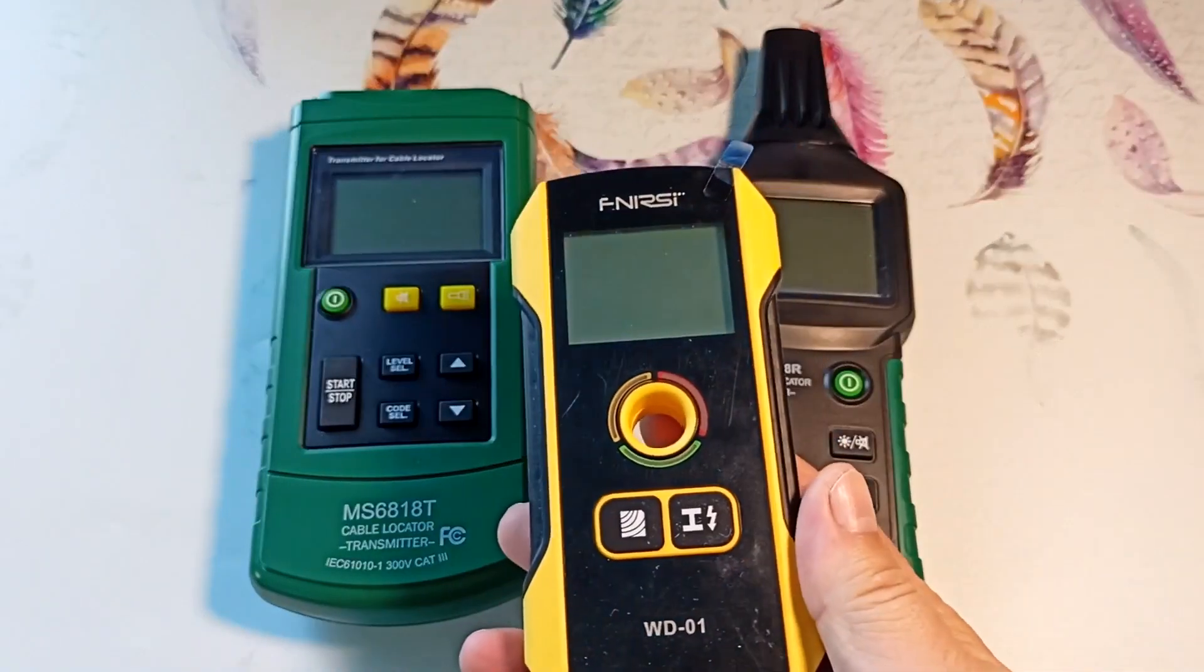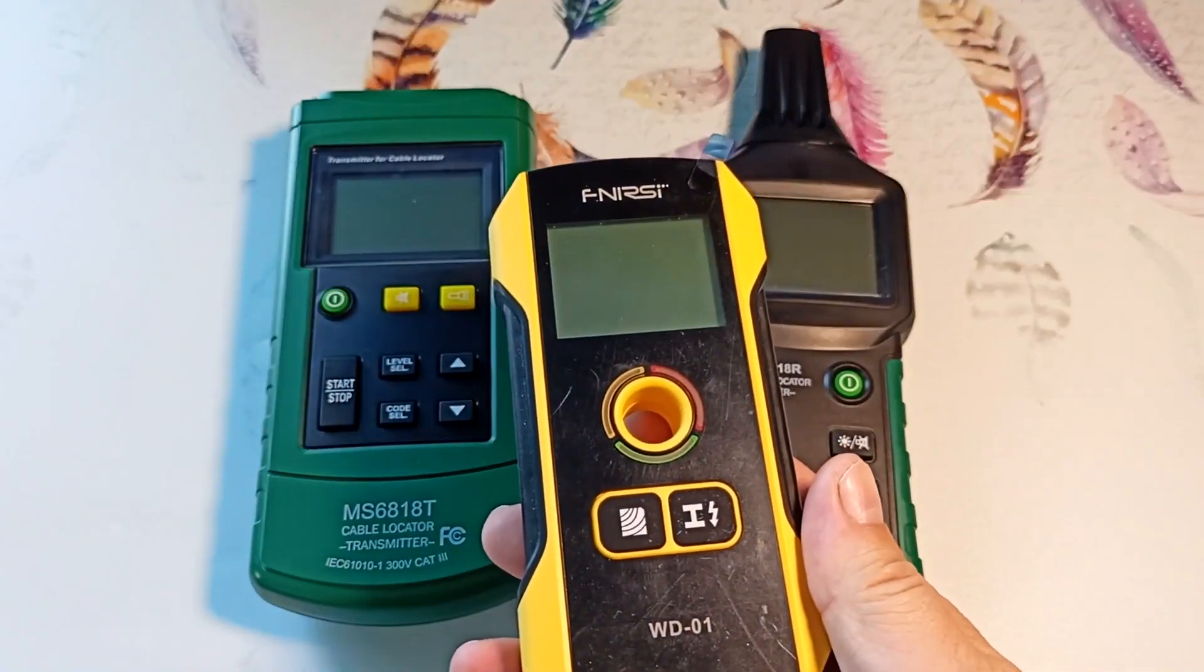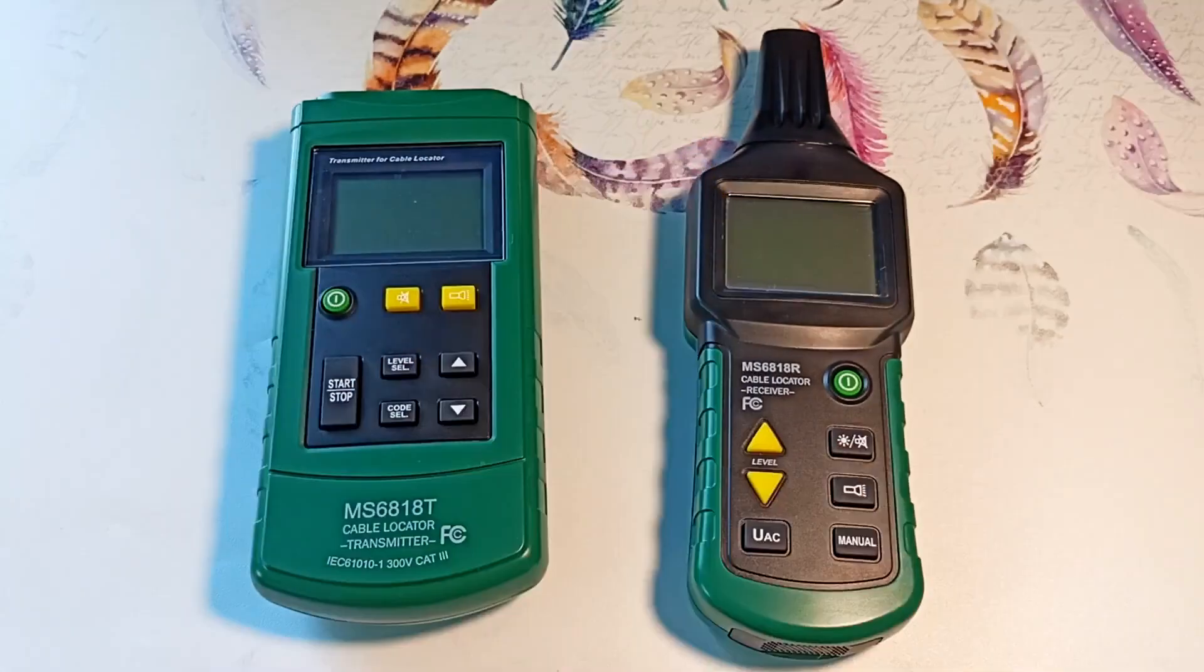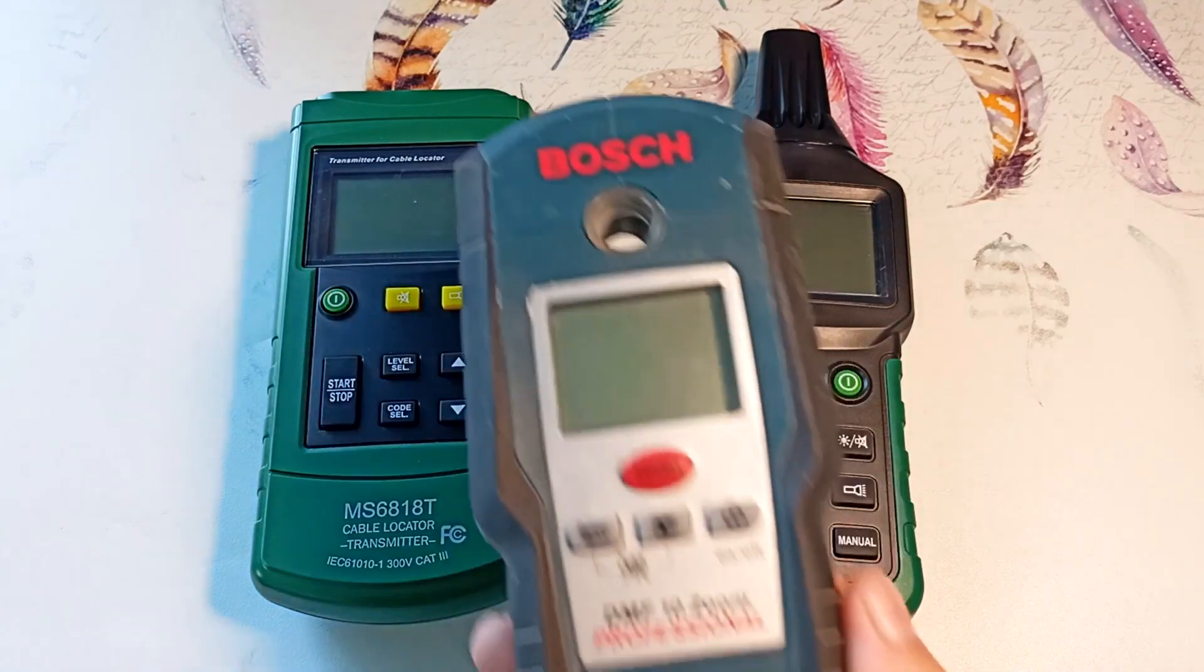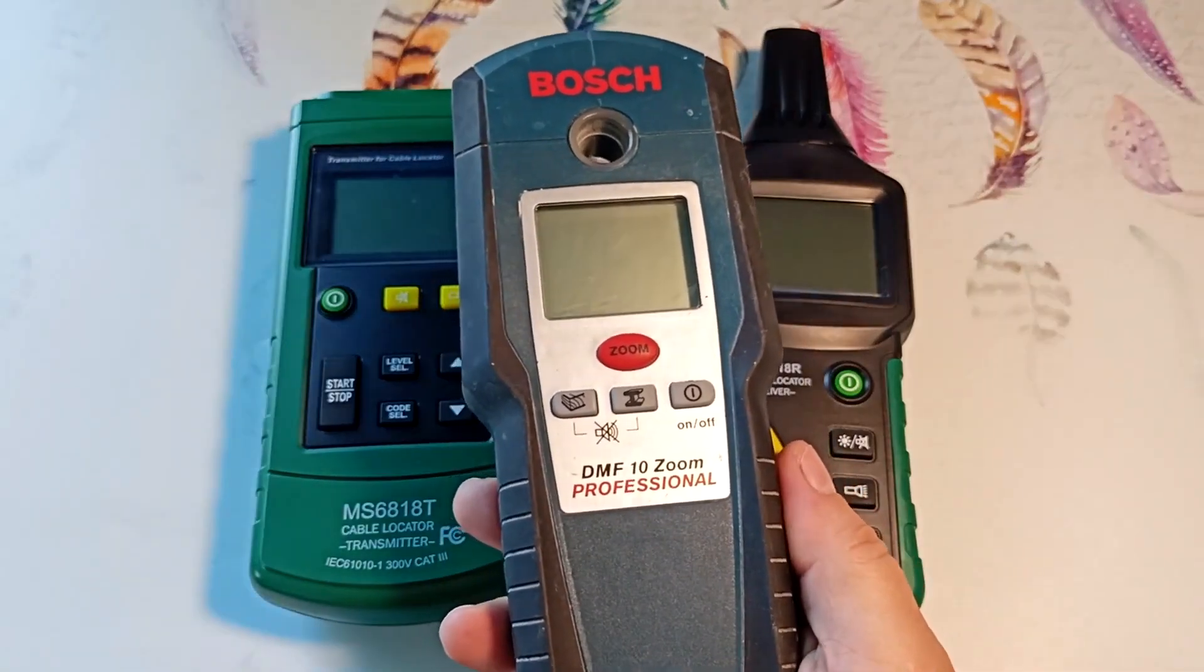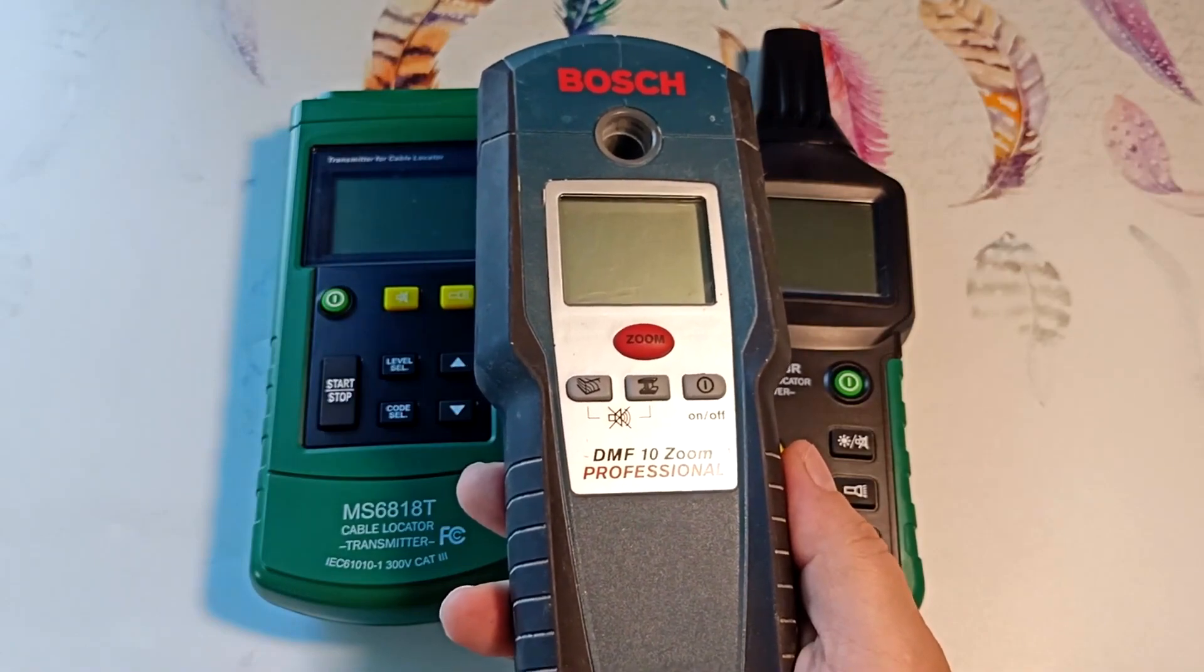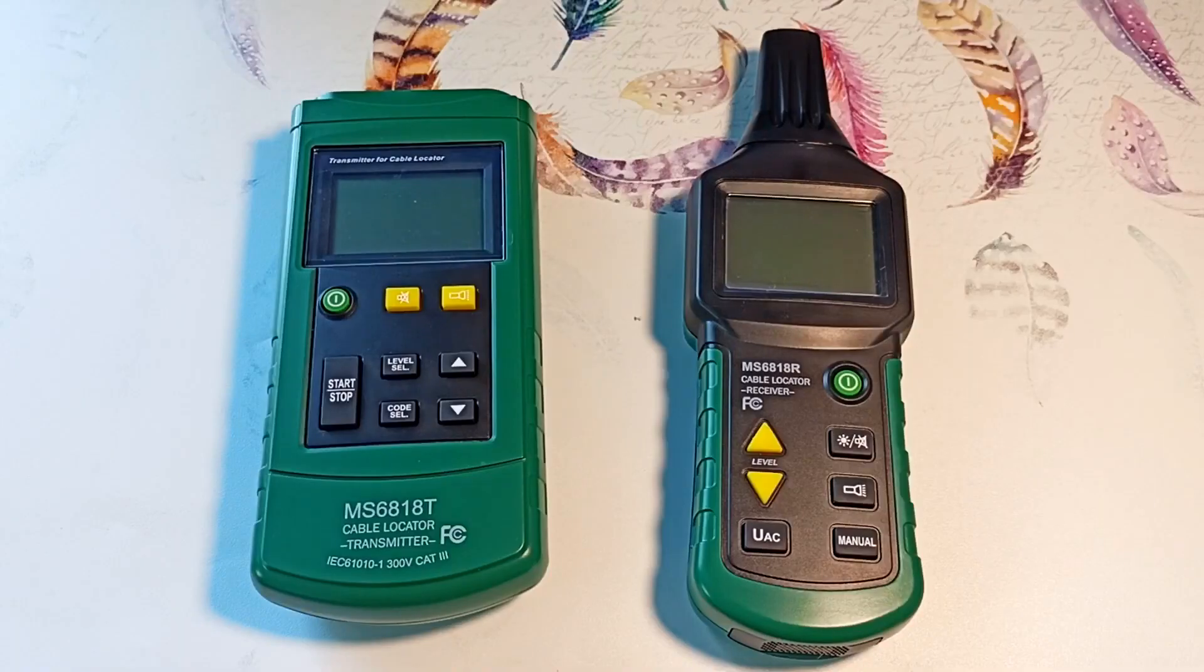An example is this device from FNIRSI, which was recently reviewed on the channel. I left a link to the video in the description. The location of the wiring with such devices can be detected in 50% of cases. Even if we take a professional Bosch device of this type, the results will not be better. Often these devices find wiring where there is no trace of it.